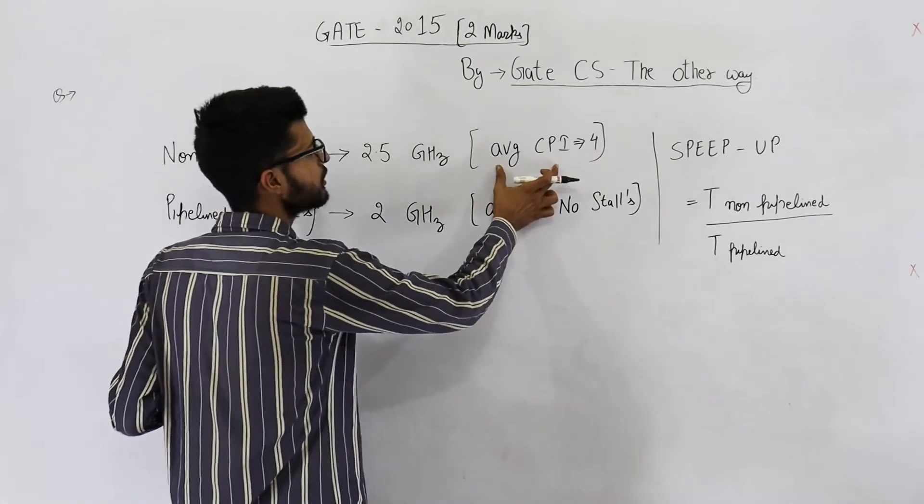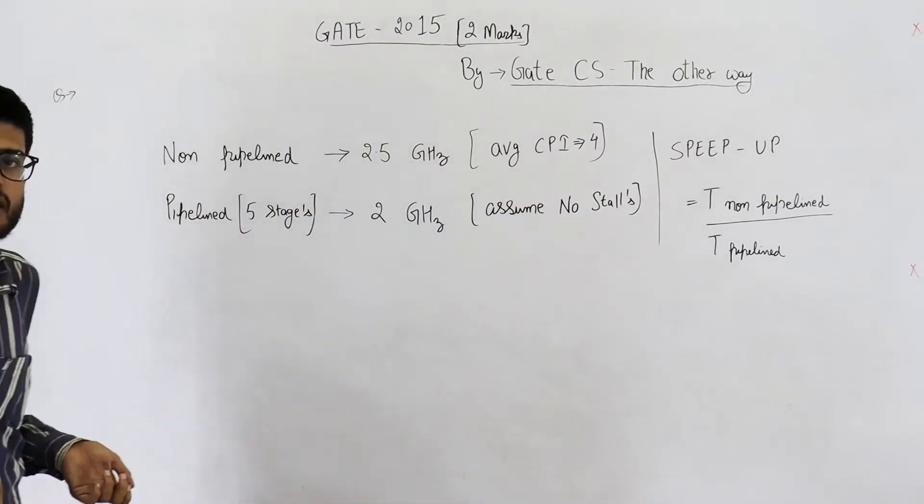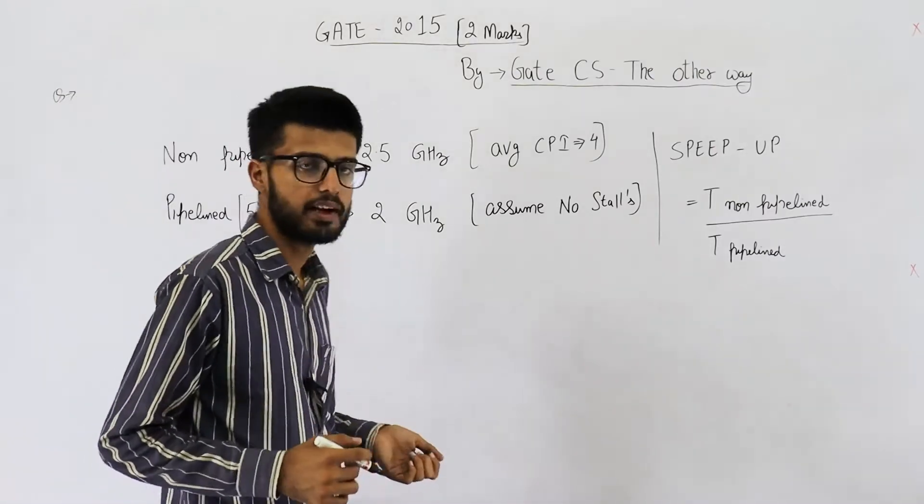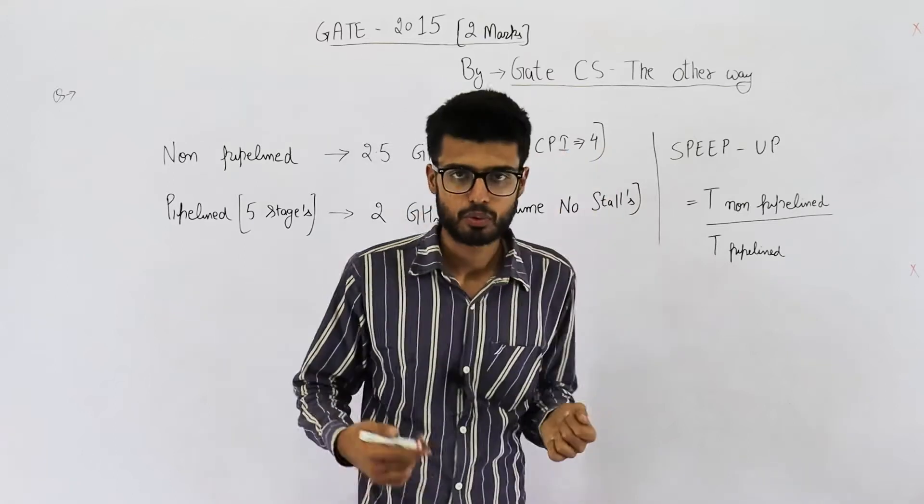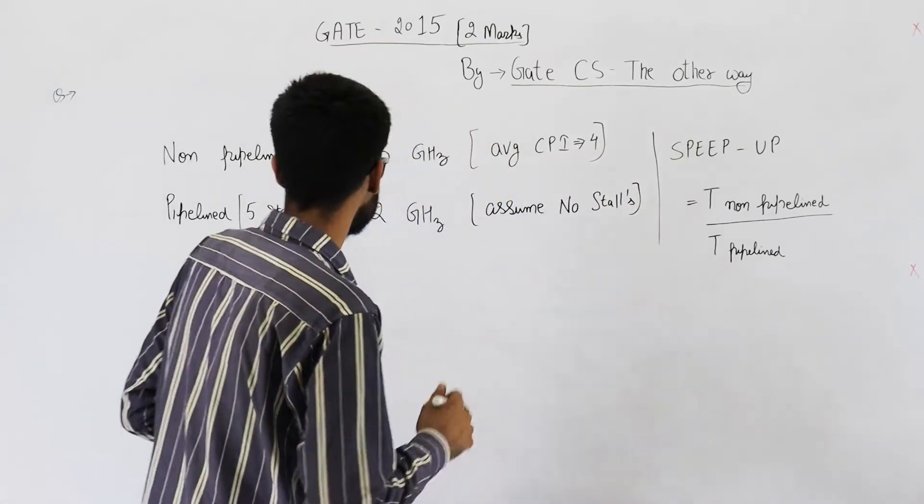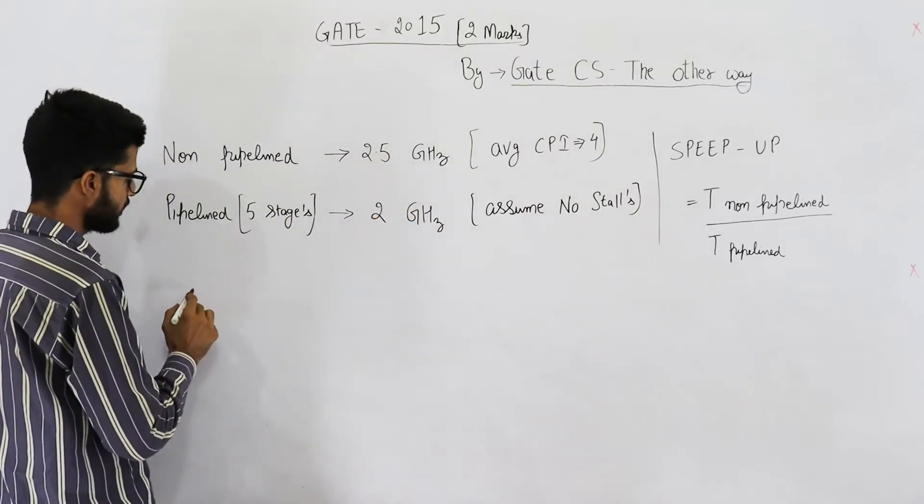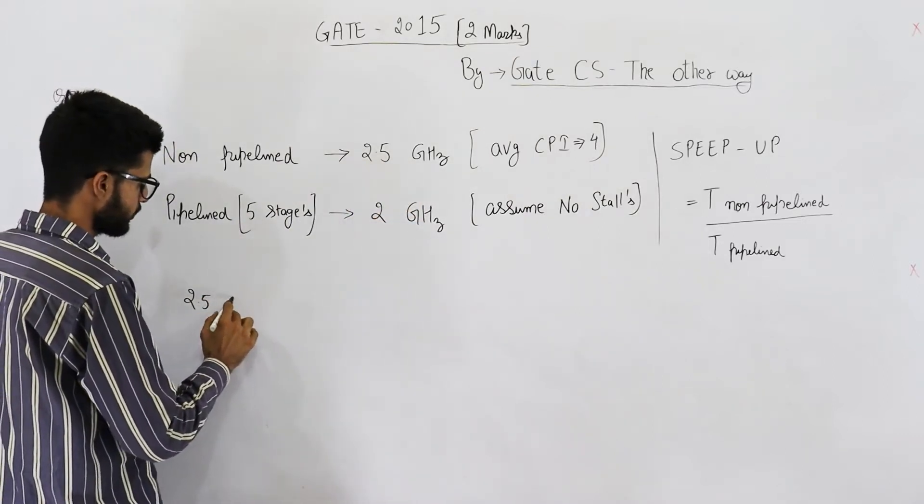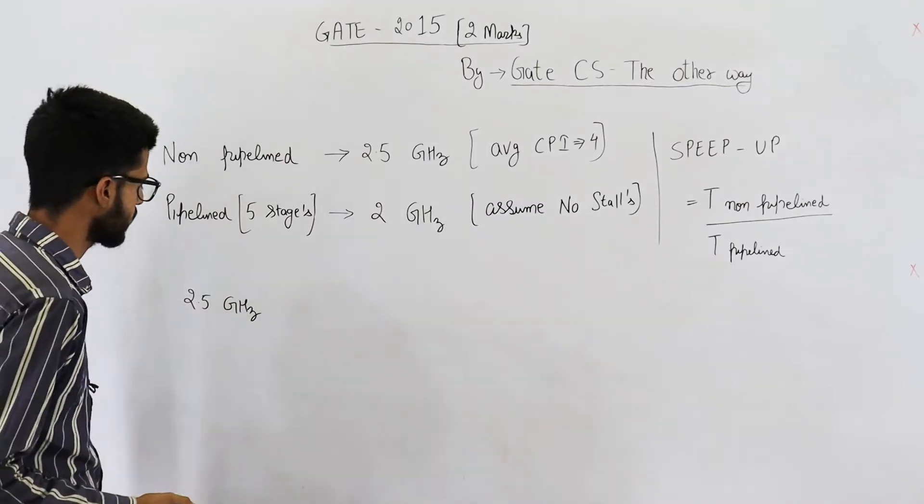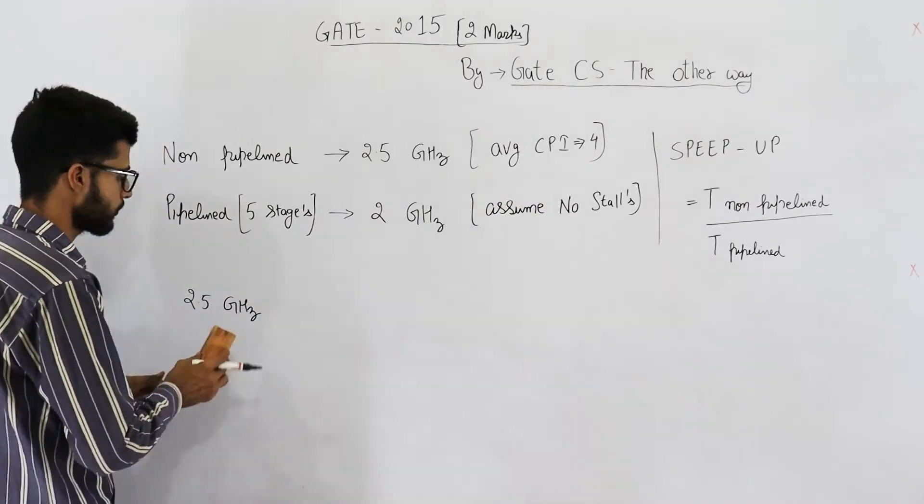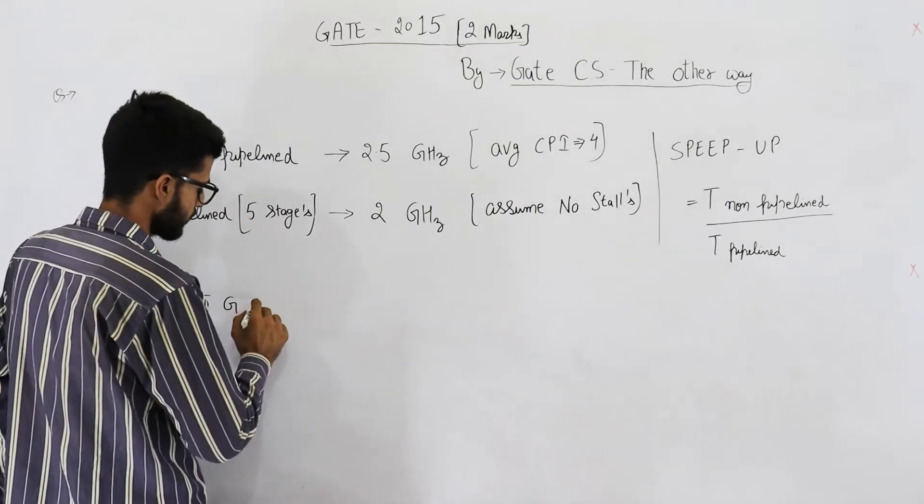Here, each instruction takes 4 clock cycles. How much time will each instruction take? For that, we need to find out how much time each clock takes. Then, we'll multiply that time by 4 to find out the time taken by each instruction. So, the frequency here is 2.5 GHz. Hertz means times per second. So, you can say that 2.5 GHz clocks are generated every second.